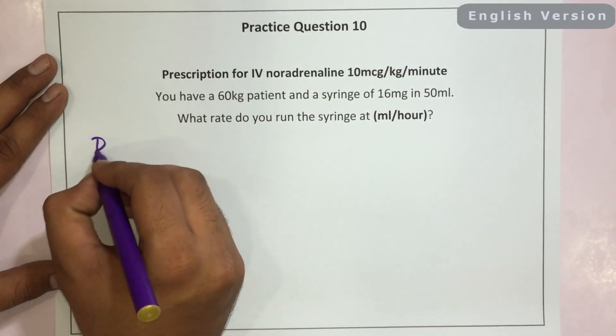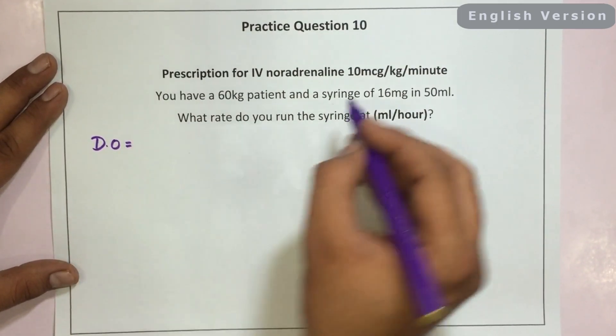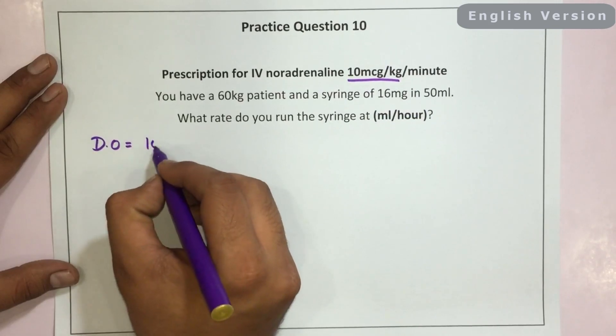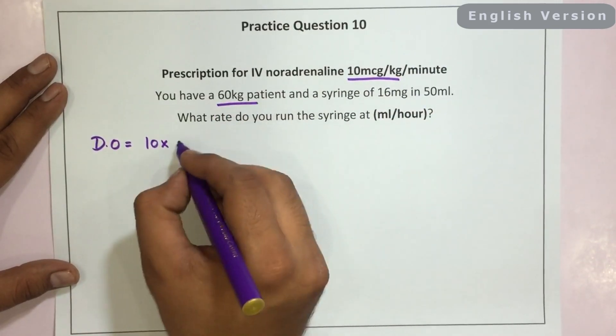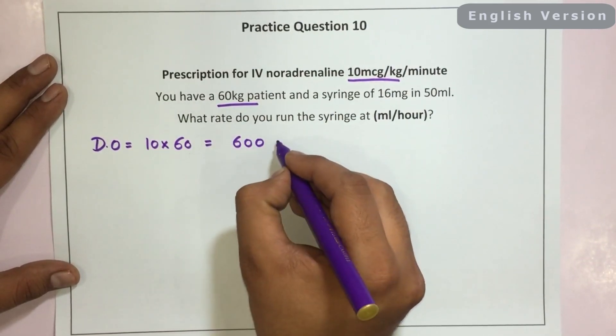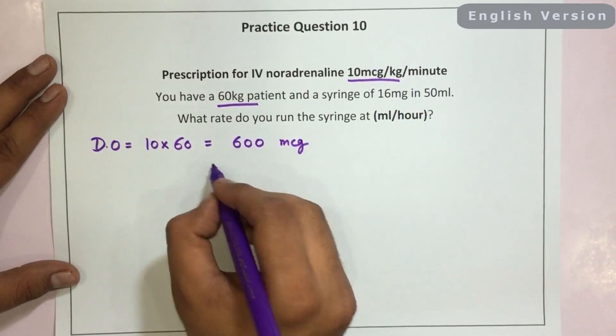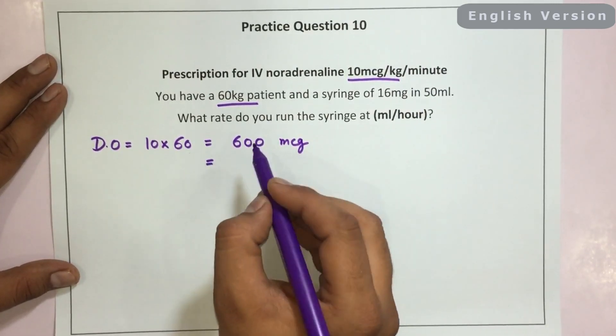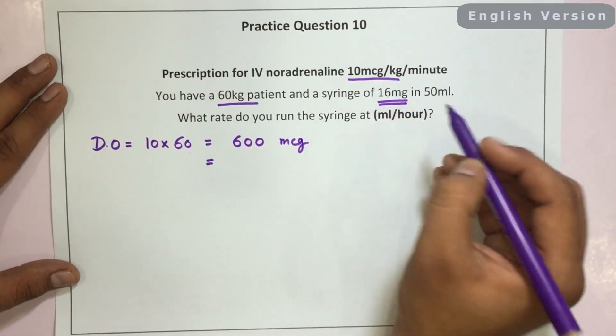What we need to do? We need to first of all see what is the dose ordered, DO. The dose ordered is 10 micrograms per kg and we have a patient of 60 kg. So the net dose would become 600 micrograms. 600 micrograms we need to convert it into milligrams because the dose here is in milligrams.